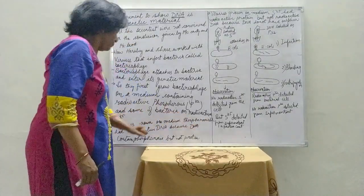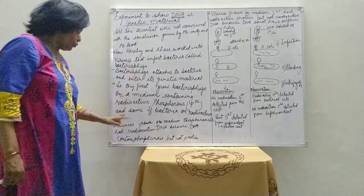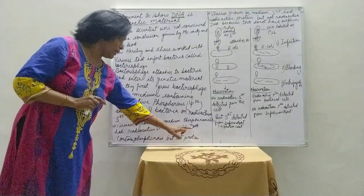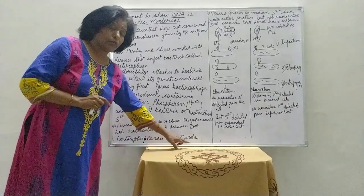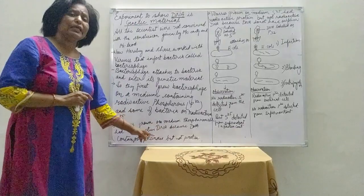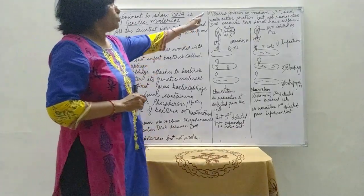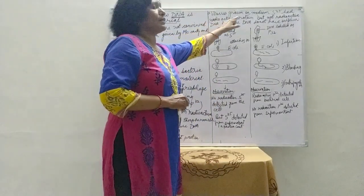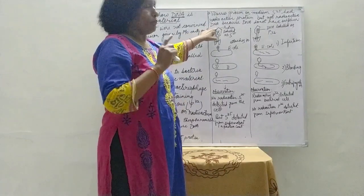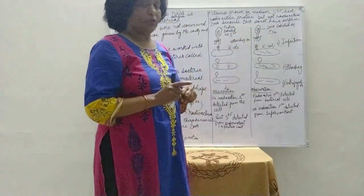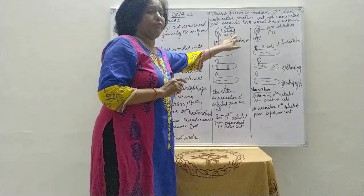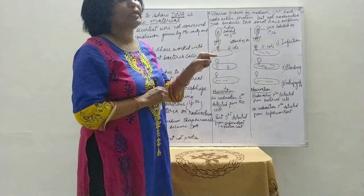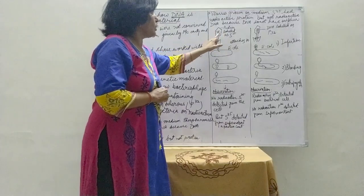Viruses grown on medium P32 had radioactive DNA because DNA contains phosphorus but not sulfur, so radioactive P32 is easily incorporated into the DNA. But bacteriophages grown on medium S35 had radioactive protein only, not radioactive DNA, because DNA does not have sulfur. S35 is only incorporated into the protein coat because protein has sulfur content.